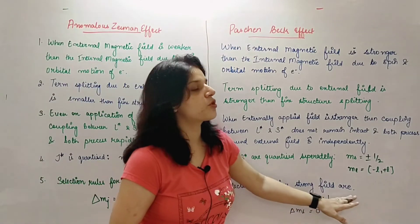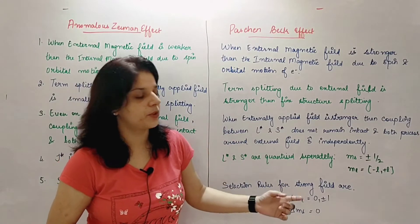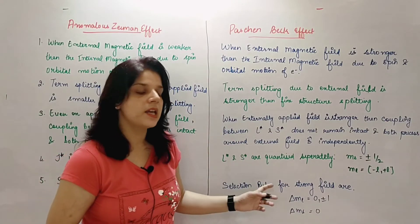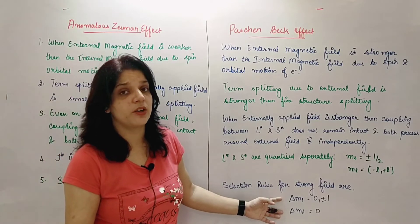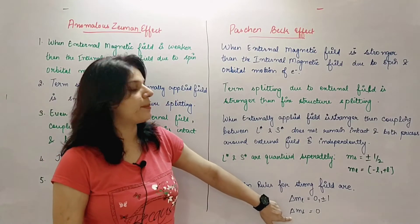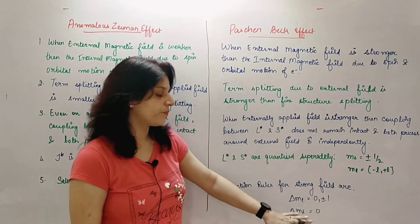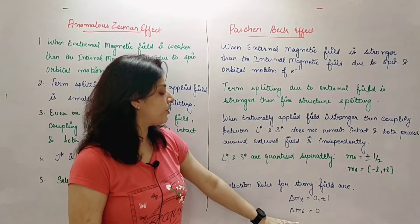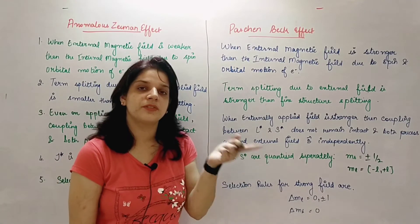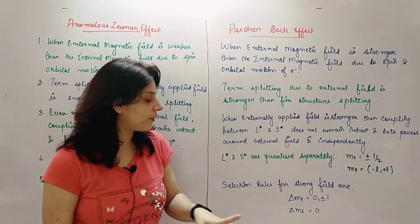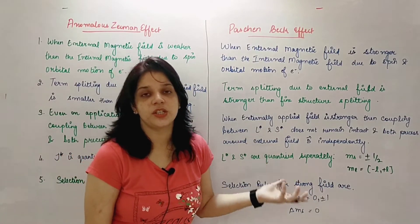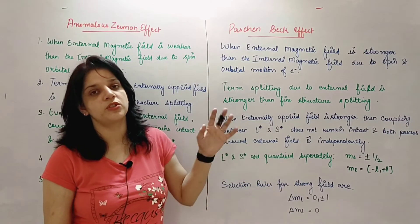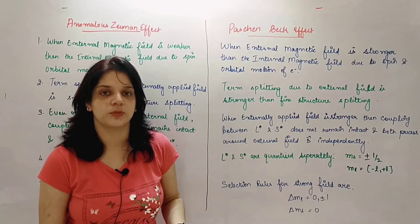Whereas, selection rules for strong field case will be - coupling has broken, J doesn't exist, so my selection rules will remain independent of each other. ms value can change by zero, which means minus half to minus half, plus half to plus half. Whereas ml value, the change in ml will be allowed for zero, plus one, and minus one.